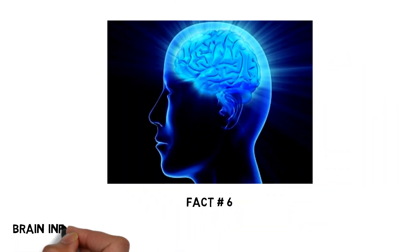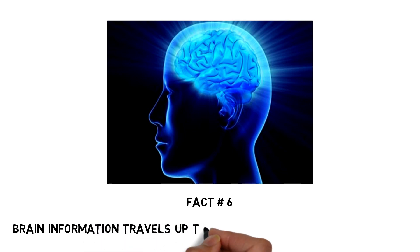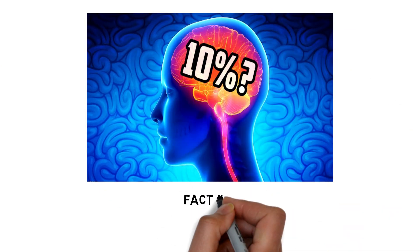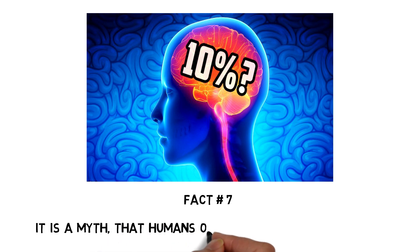Fact number 6: Brain information travels up to an impressive 268 miles per hour. Fact number 7: It is a myth that humans only use 10% of brain.